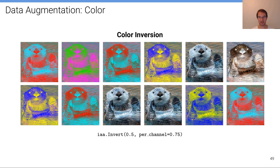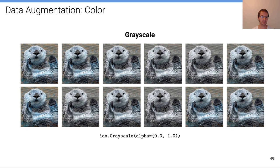We can simply invert colors, which makes images look very different from what we observe in the real world. However, it can still be a very useful augmentation for your deep neural network — it's an empirical choice that you have to investigate for your problem. You can also convert color images to grayscale or to something in between grayscale and full color.